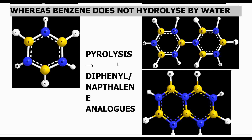You might not have come across any such reaction with benzene — benzene does not react with water to give phenol, trihydroxybenzene, or any hydroxy-substituted benzene. Then comes pyrolysis. Pyro means heat, lysis means breaking, so it means breaking or decomposition by heat. When you perform pyrolysis on borazine, you get two different types of compounds which are analogous to diphenyl and naphthalene in the case of benzene. One product looks like diphenyl, and the other has two fused rings and looks like naphthalene — a naphthalene analog.